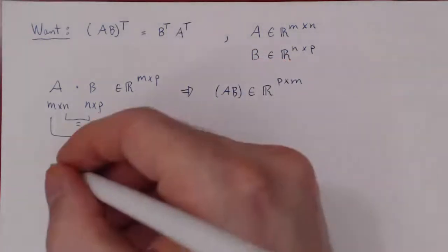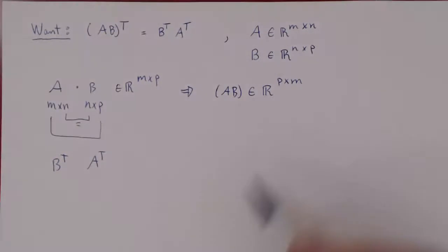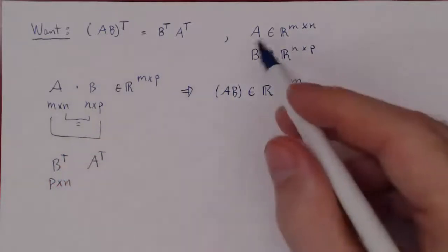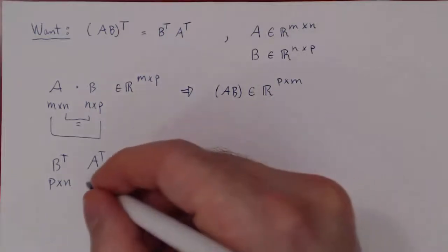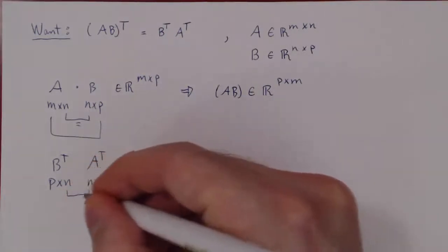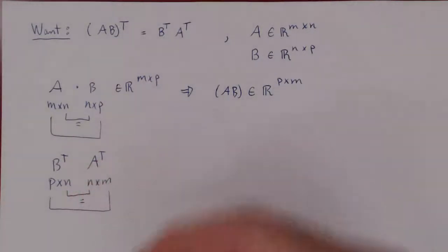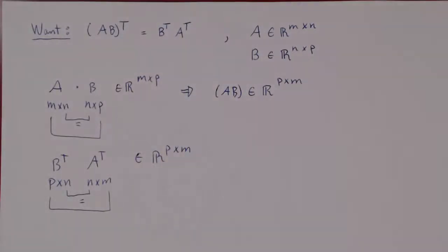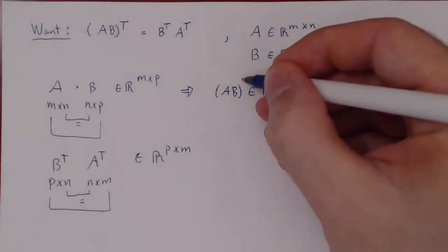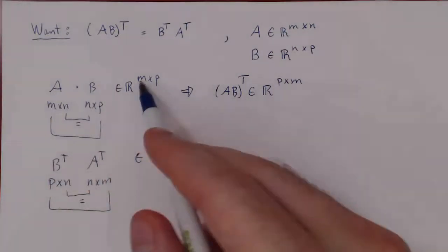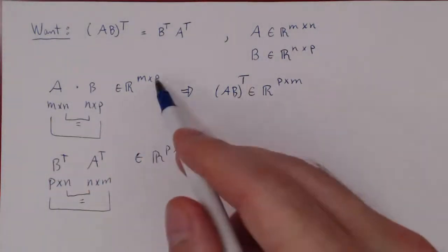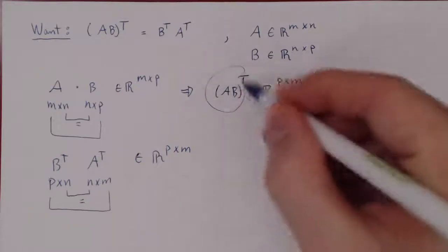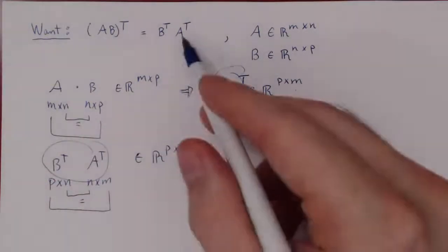Let's look at the right-hand side: B transposed times A transposed. If B is N by P, then B transposed is P by N. And if A is M by N, then A transposed is N by M. So N equals N, the product is defined, and B transposed A transposed ends up being a P by M matrix. So AB transposed and B transposed A transposed both have the same size.